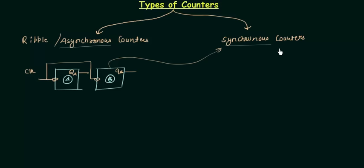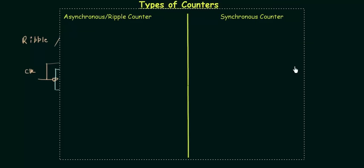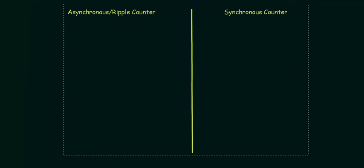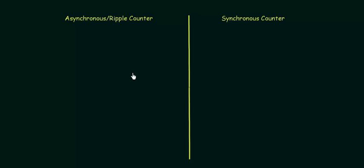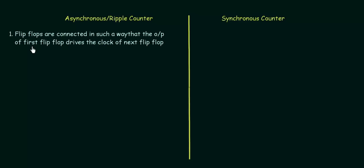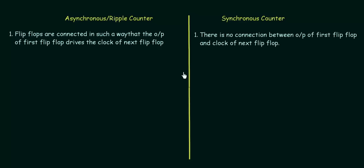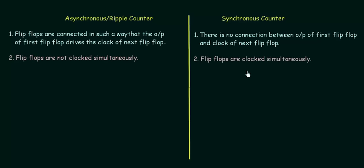Now we will do a quick comparison between synchronous and asynchronous counters so that you can write a proper answer in your exams. The first point: in asynchronous counters, flip-flops are connected such that the output of the first flip-flop drives the clock of the next flip-flop. In synchronous counters, there is no such connection because the clock is given simultaneously to all flip-flops. The second point: in asynchronous counters, flip-flops are not clocked simultaneously, whereas in synchronous counters they are.